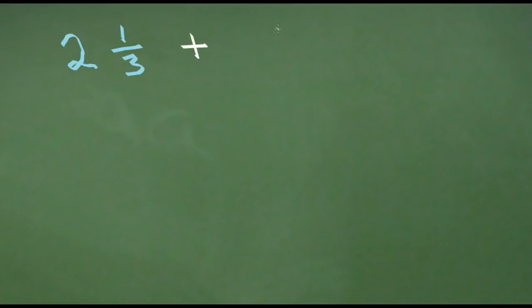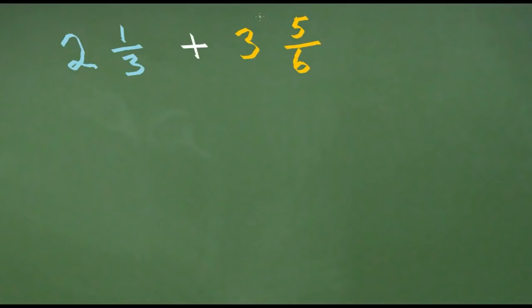Let's take a look at one more example of adding mixed fractions. In this one, let's take two and one third, and add three and five sixths. So again, to begin with, let's ignore our whole numbers — let's ignore the two from two and a third, and the three from three and five sixths. Let's just get adding the fractions out of the way first. So let's take one third and add five sixths.